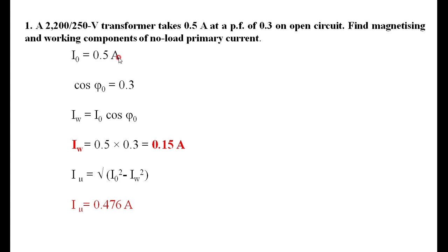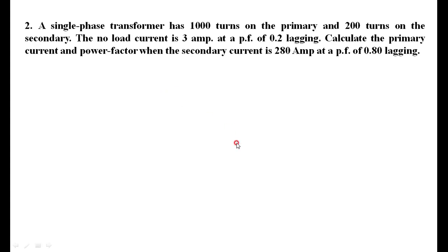Numericals are very simple — you must know which formula to apply for finding out the unknown quantities. The next problem: a single-phase transformer has 1000 turns on the primary and 200 turns on the secondary. The no-load current is 3 amperes at a power factor of 0.2 lagging.